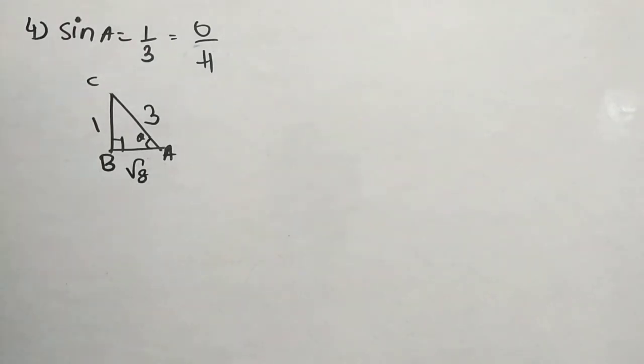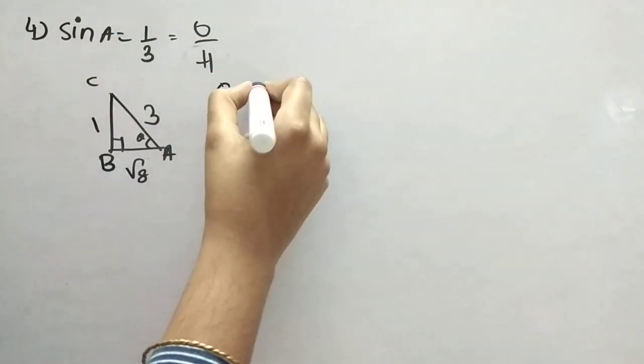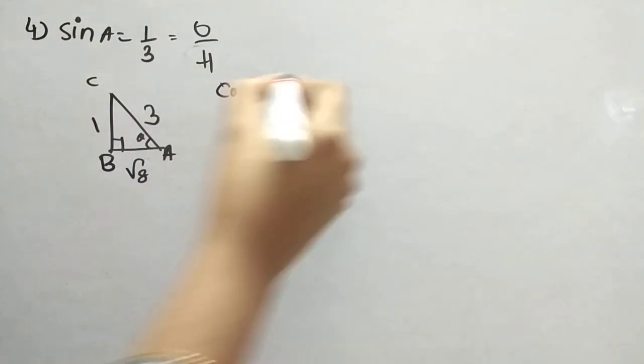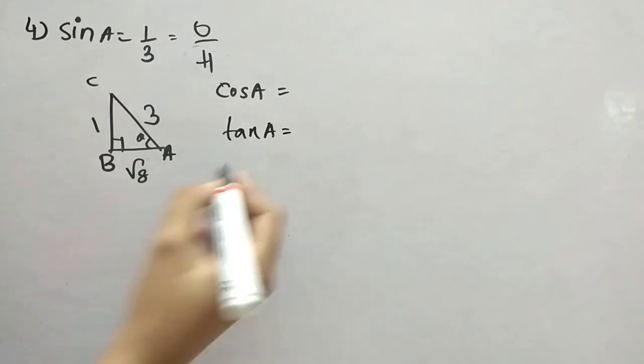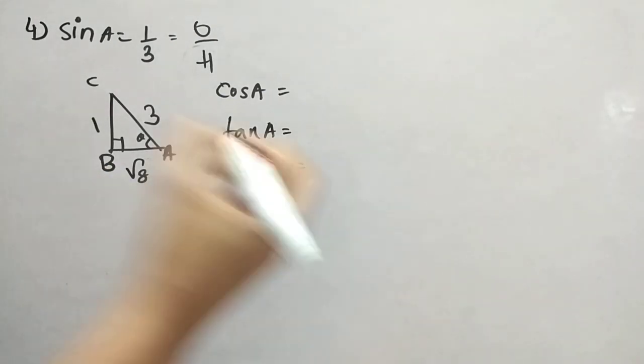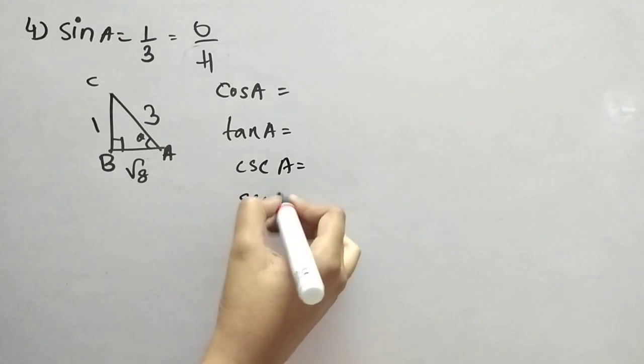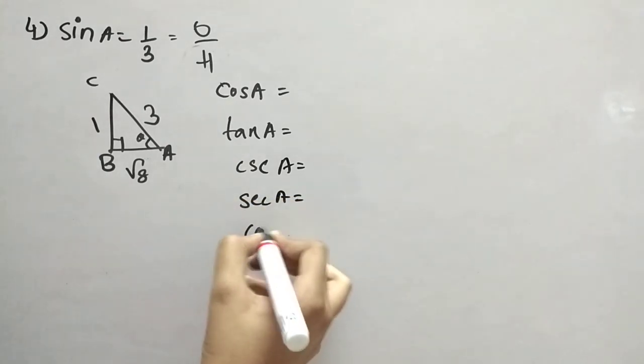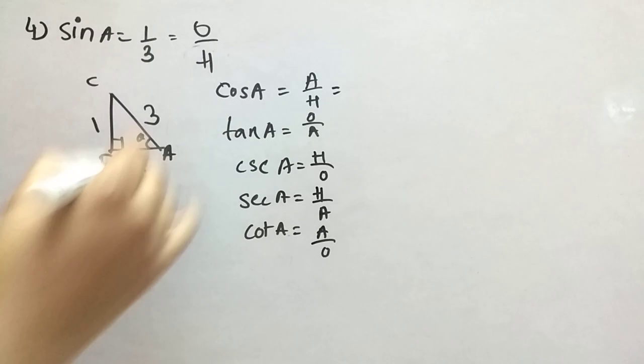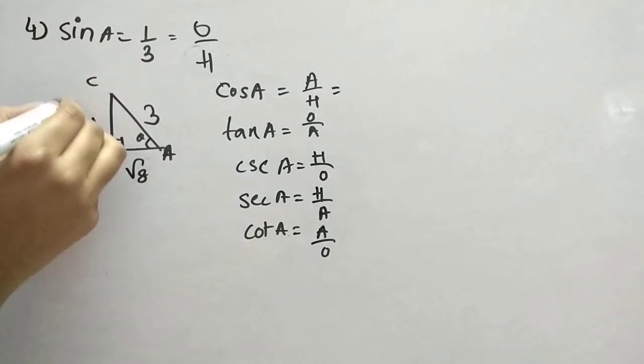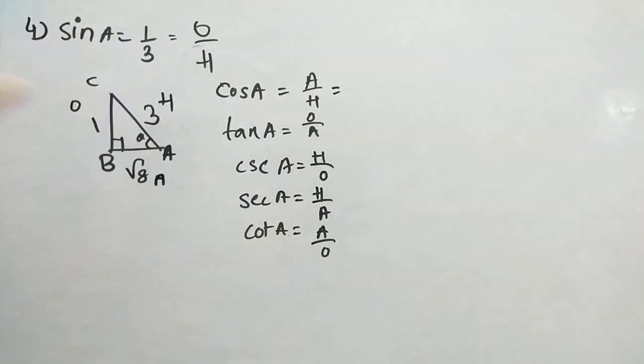So, all other ratios means sin theta, cos theta, cos A. You should see, right? Tan A, and secant A, secant A, and cot A. So, all this we have to find, right? Now, sine was already found. That's why I didn't write. So, let's find all these now. All the formulas I have written here. Now, let's just substitute. That's it. So, we all know this is the, this is opposite, adjacent, and hypotenuse. Now, easy. That's why, for making it easy, I wrote A, O, H.